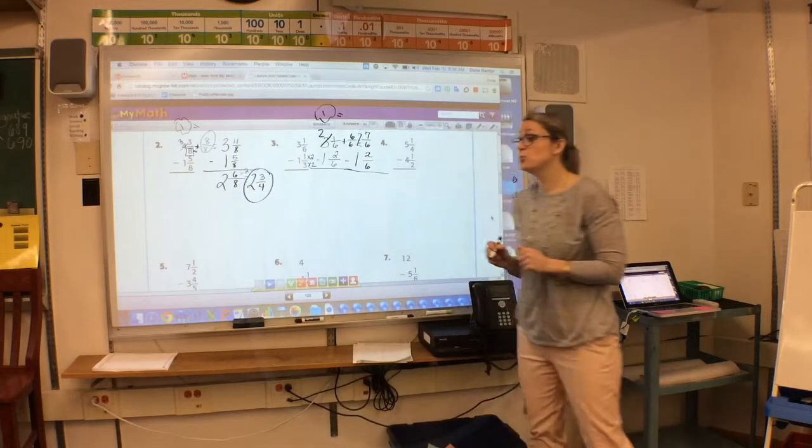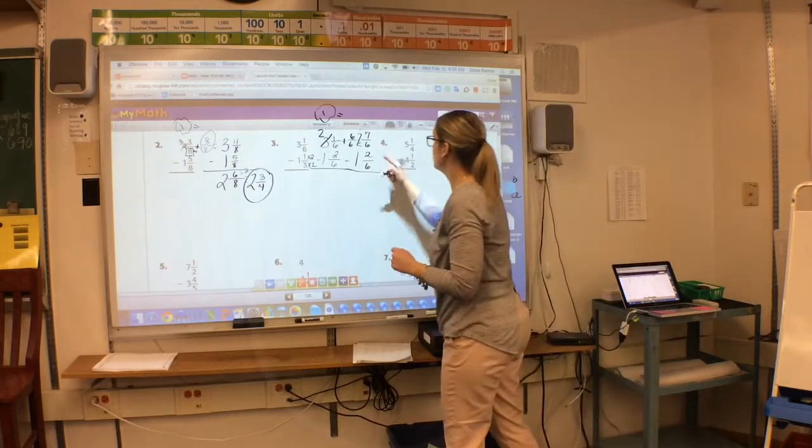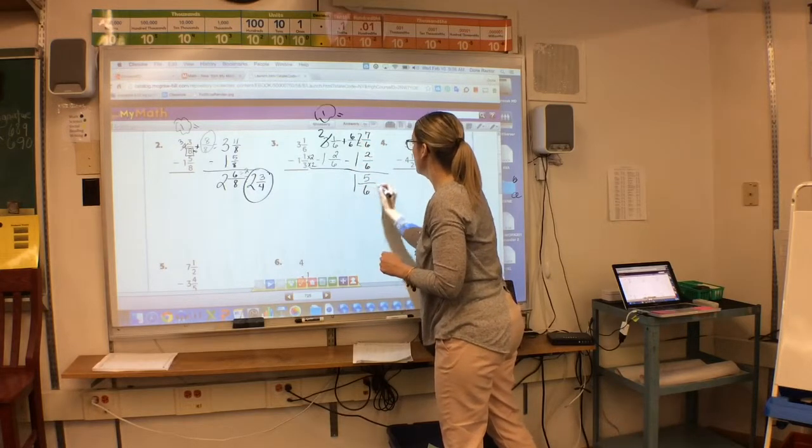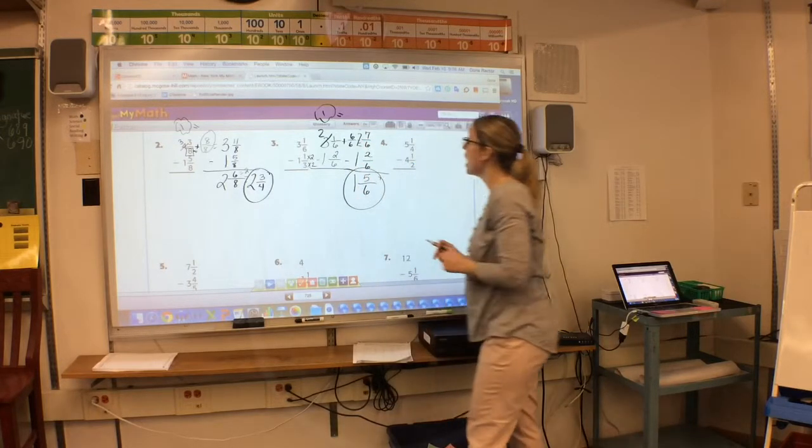Guess what? Now I'm ready to subtract. 7 take away 2 is 5. My denominator stays the same. 2 take away 1 is 1. 1 and 5 sixths. I am done.